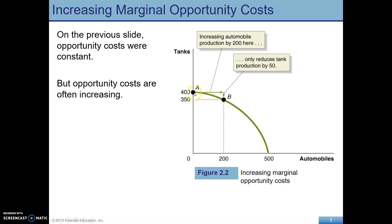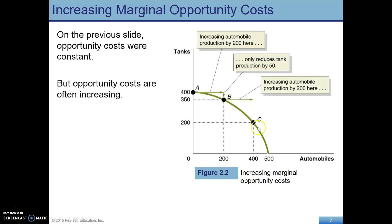Here, using a tanks and automobiles example, at first to go from 0 to 200 automobiles, we only have to give up 50 tanks. However, to go from B to C, to get 200 additional automobiles, we now have to give up 150 tanks. So we are giving up more tanks to get the same number of automobiles — that is increasing opportunity costs.